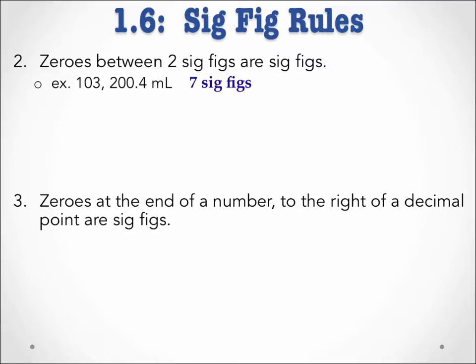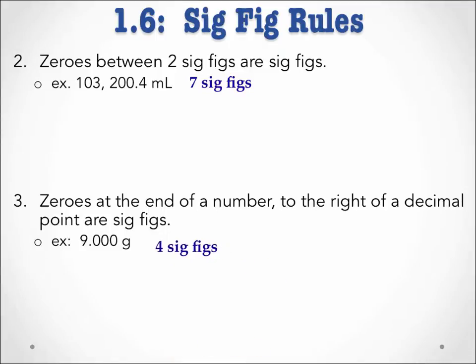Additionally, zeros at the end of a number to the right of a decimal point are sig figs. For example, in the measurement 9.000 grams, all three of those zeros are at the end of the number to the right of the decimal. Therefore all three zeros are significant, giving this value 4 sig figs.